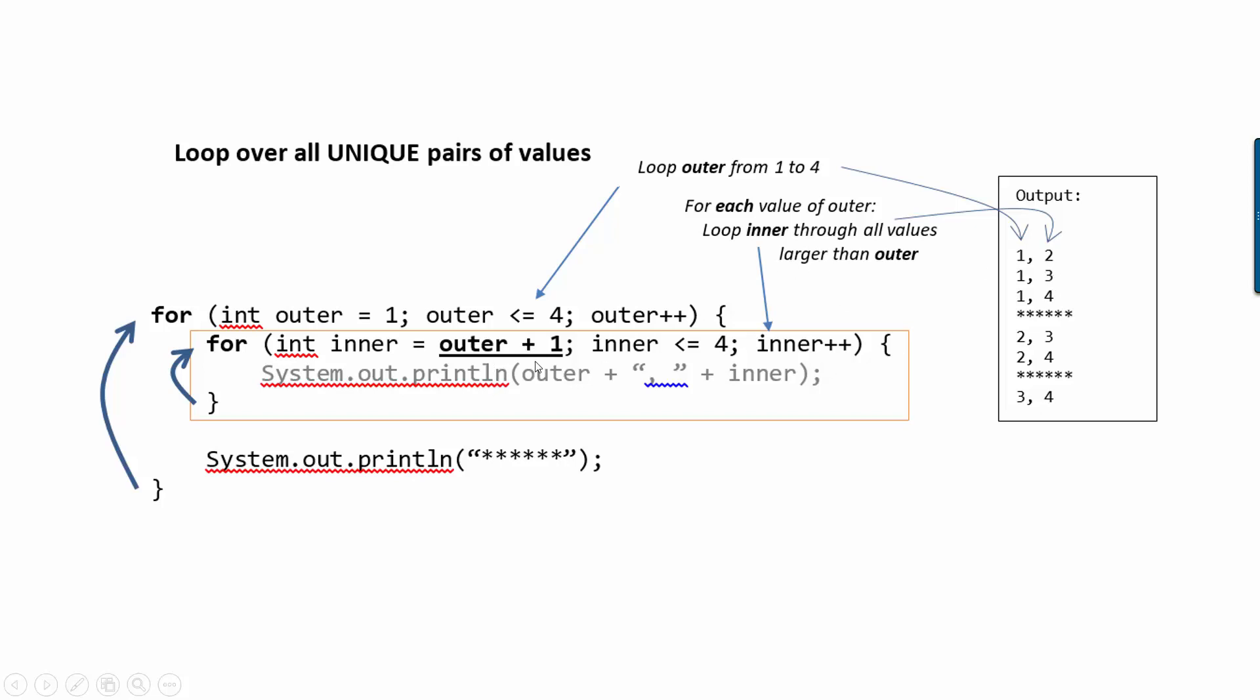So here, when outer is one, inner starts at two and goes up to four. Then when outer is two, inner starts at three and goes to four. And when outer is three, inner starts at four.